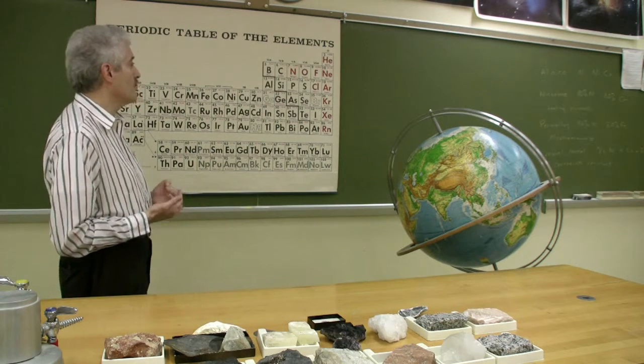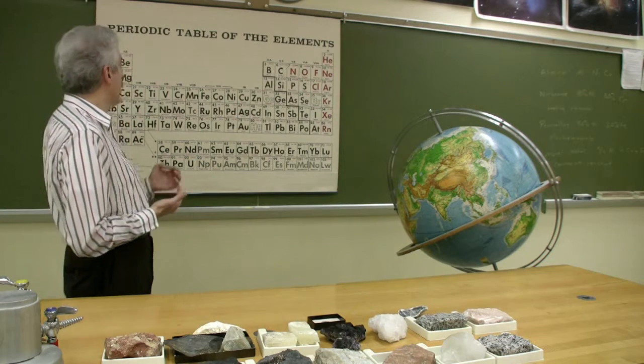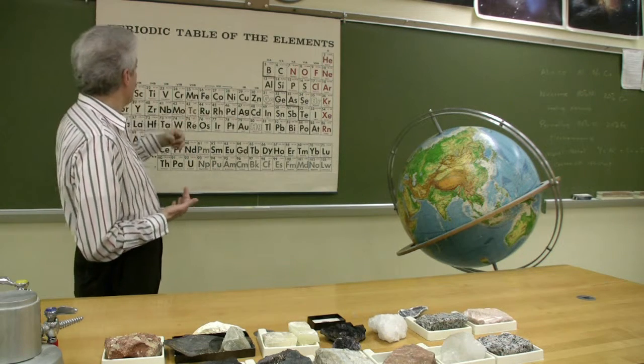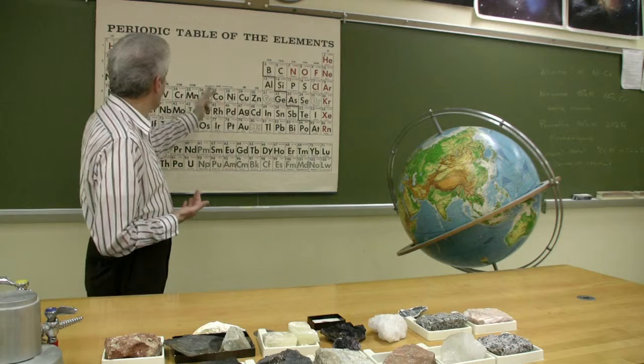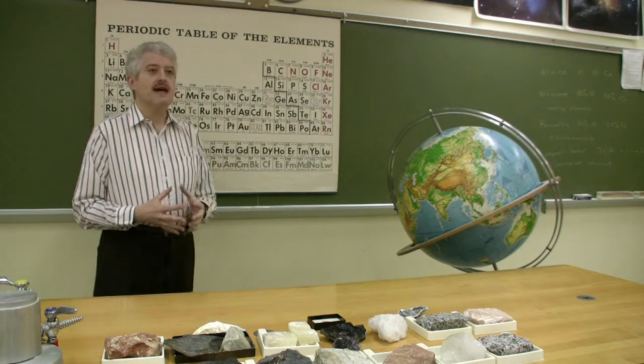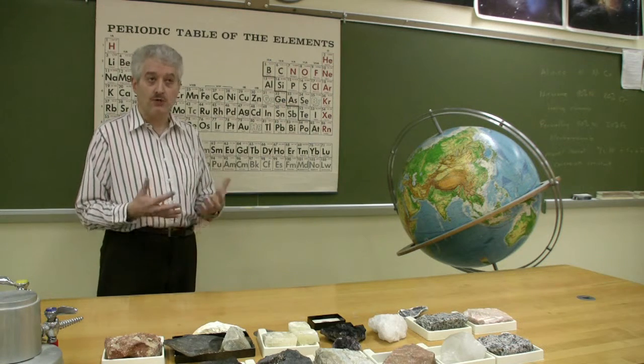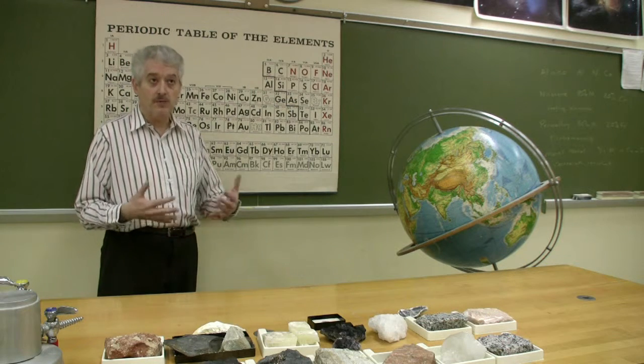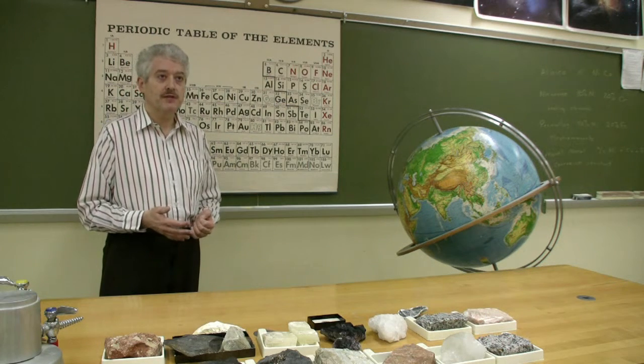And then finally, there's a material called monel metal, M-O-N-E-L, which is about two-thirds nickel with also some copper and iron present. It's used to make a metal that's very resistant to corrosion for applications where you're going to have the possibility of corrosion taking place.